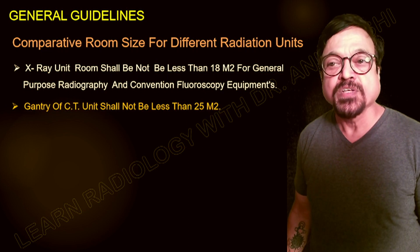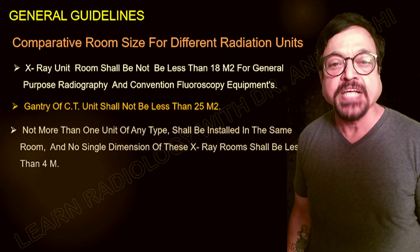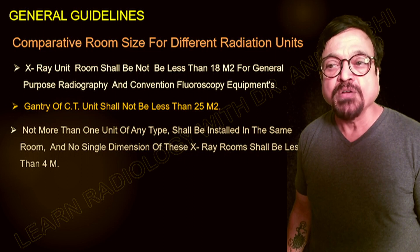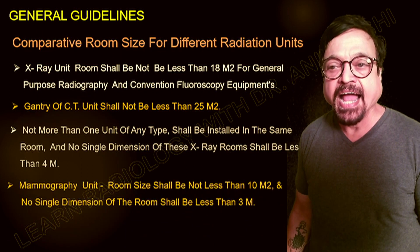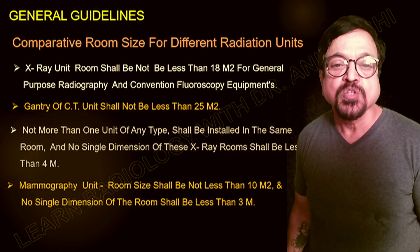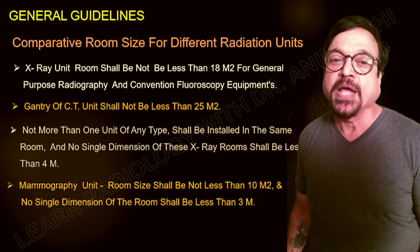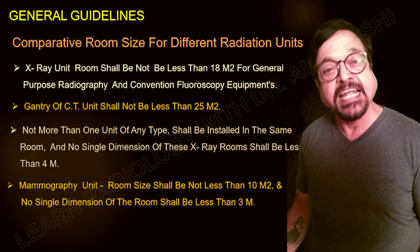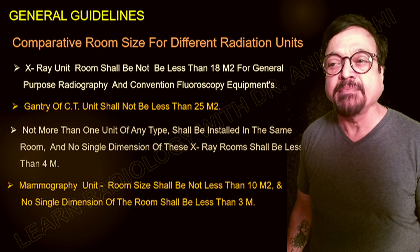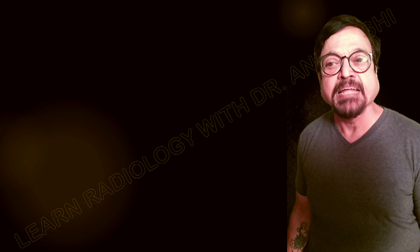For CT, the gantry room has a different scale — it is 25 square meters — because it uses high-radiation x-rays for longer time periods. Not more than one unit of any type shall be installed in the same room, and no single dimension of these x-ray rooms shall be less than 4 meters. You cannot install two x-ray units or two radiation-generating units in the same room.